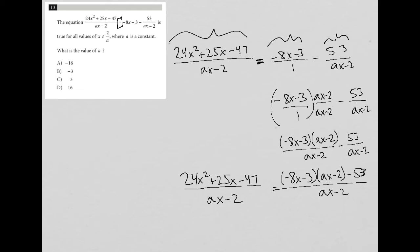If they're truly equal, then we should have a match for the numerator and the denominator. I have ax minus 2 on both denominators, so that's taken care of. Those are already matched.